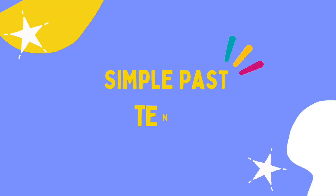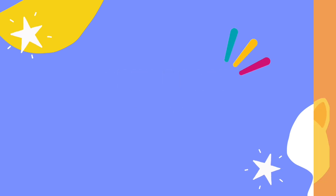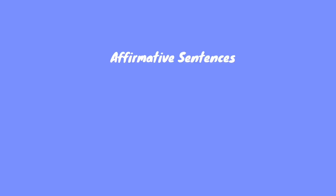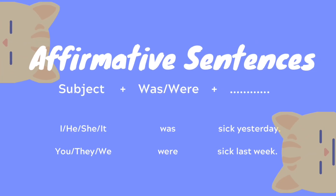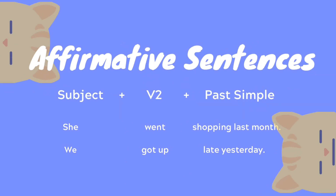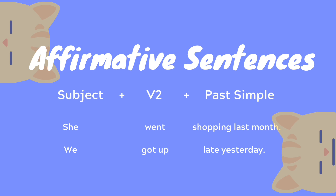Now let's begin: Simple Past Tense. For an affirmative sentence, the form is subject plus 'was' or 'were' plus the rest of the sentence. Alternatively, an affirmative sentence can use subject plus verb 2 in past simple.